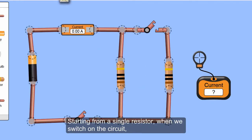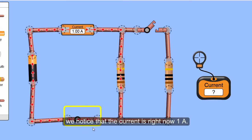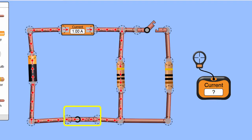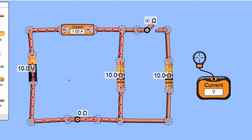Starting from a single resistor, when we turn on the circuit, we notice that the current is right now 1 ampere. Why is it 1 ampere? Simply because I set the voltage to be 10 volts and 10 ohms, so current is 1.